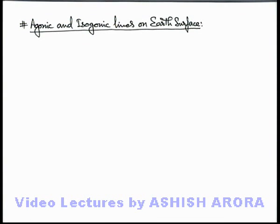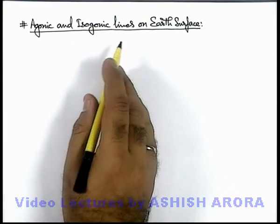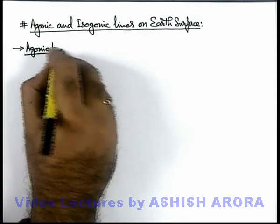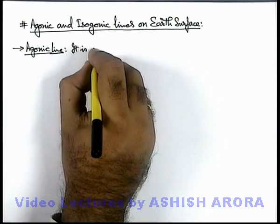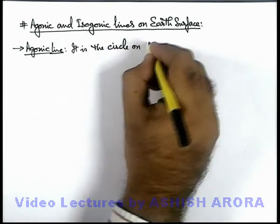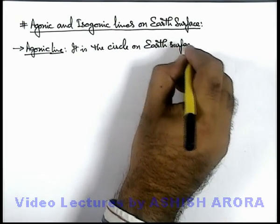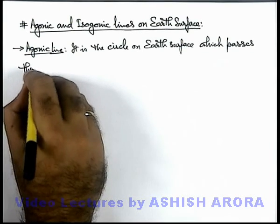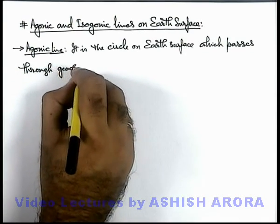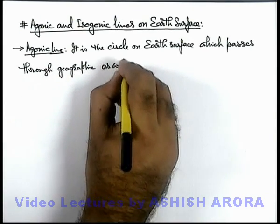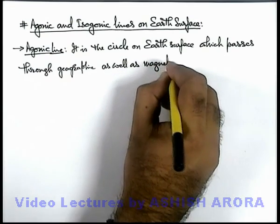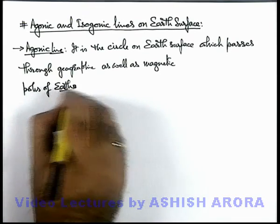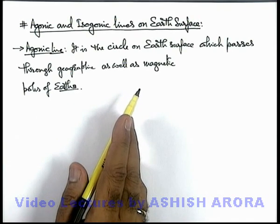Let us discuss some more important terms in terrestrial magnetism. These are agonic and isogonic lines on earth surface. About agonic line, we can state that it is the circle on earth surface which passes through geographic as well as magnetic poles of earth. The circle which contains both geographic and magnetic poles of earth is termed as agonic line.